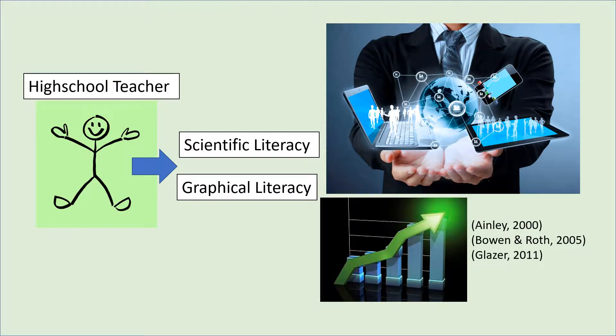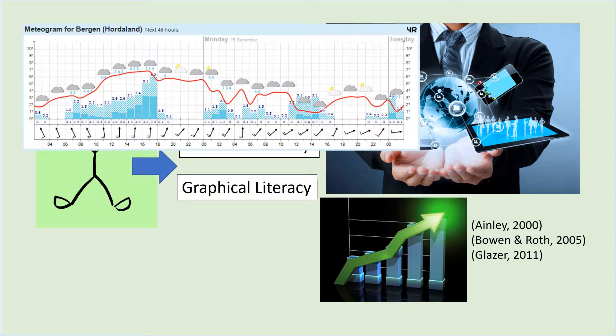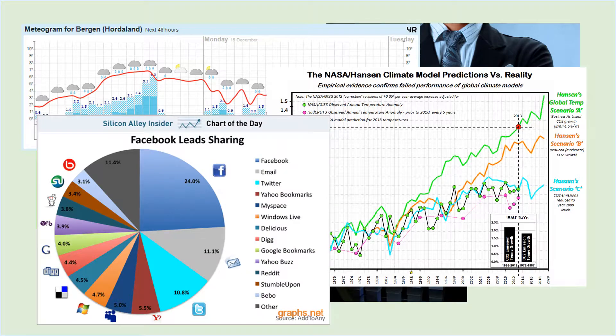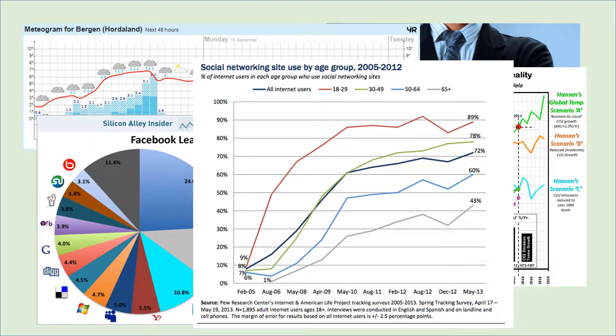To become a high school teacher in the 21st century requires the development of both scientific and graphical literacy. With technology advancing at such an exponential rate, computers and visual information are readily accessible and available to all. This means that individuals today are more likely than ever to encounter graphs and graphical information — whether in the news, social media, books, or various other sources on the internet.